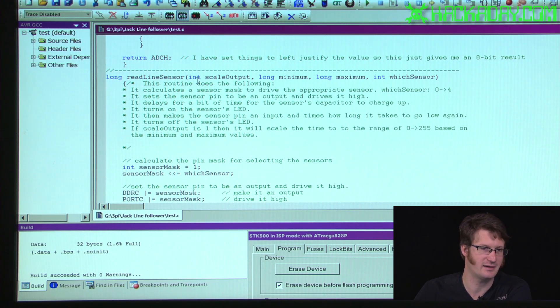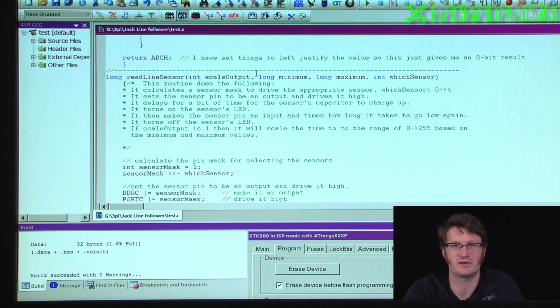So I've written a routine here called read line sensor. And it takes as arguments scale output. So if you set this to anything other than zero, what that does is it scales it into the range of zero to 255, which is much nicer to work with on an eight bit processor.